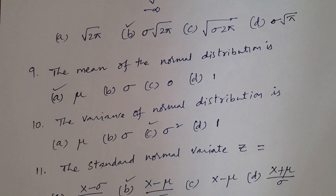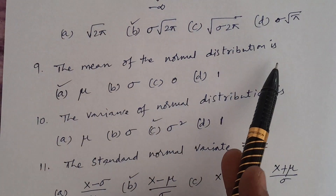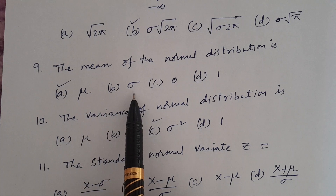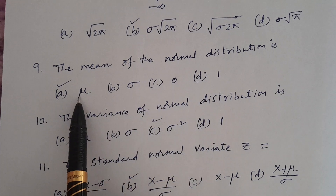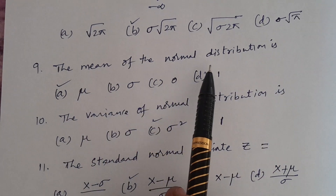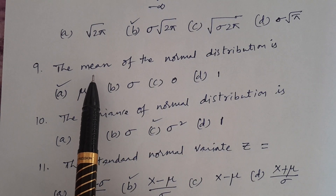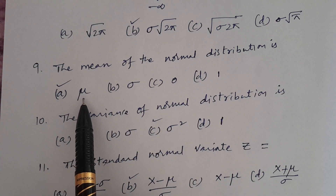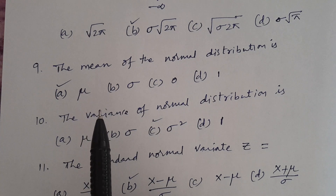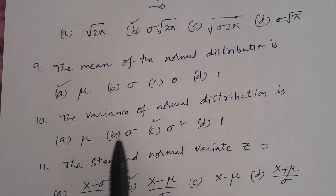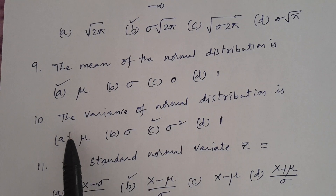Question number nine. The mean of the normal distribution is? Options: A. μ, B. σ, C. 0, D. 1. The answer is A, μ. Mu is the mean of the normal distribution. In Telugu: The mean value of normal distribution is μ, which is one of the parameters μ and σ².